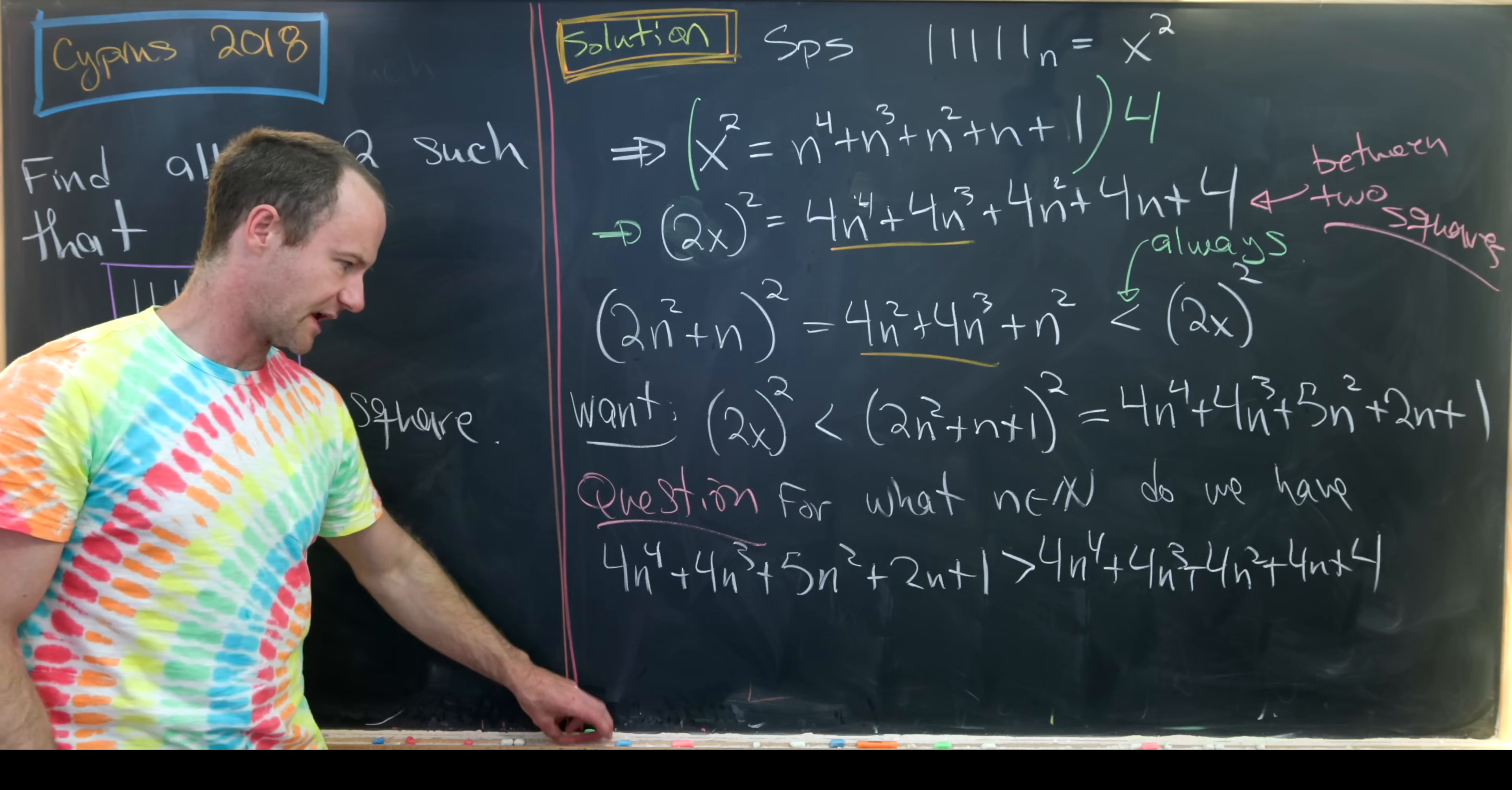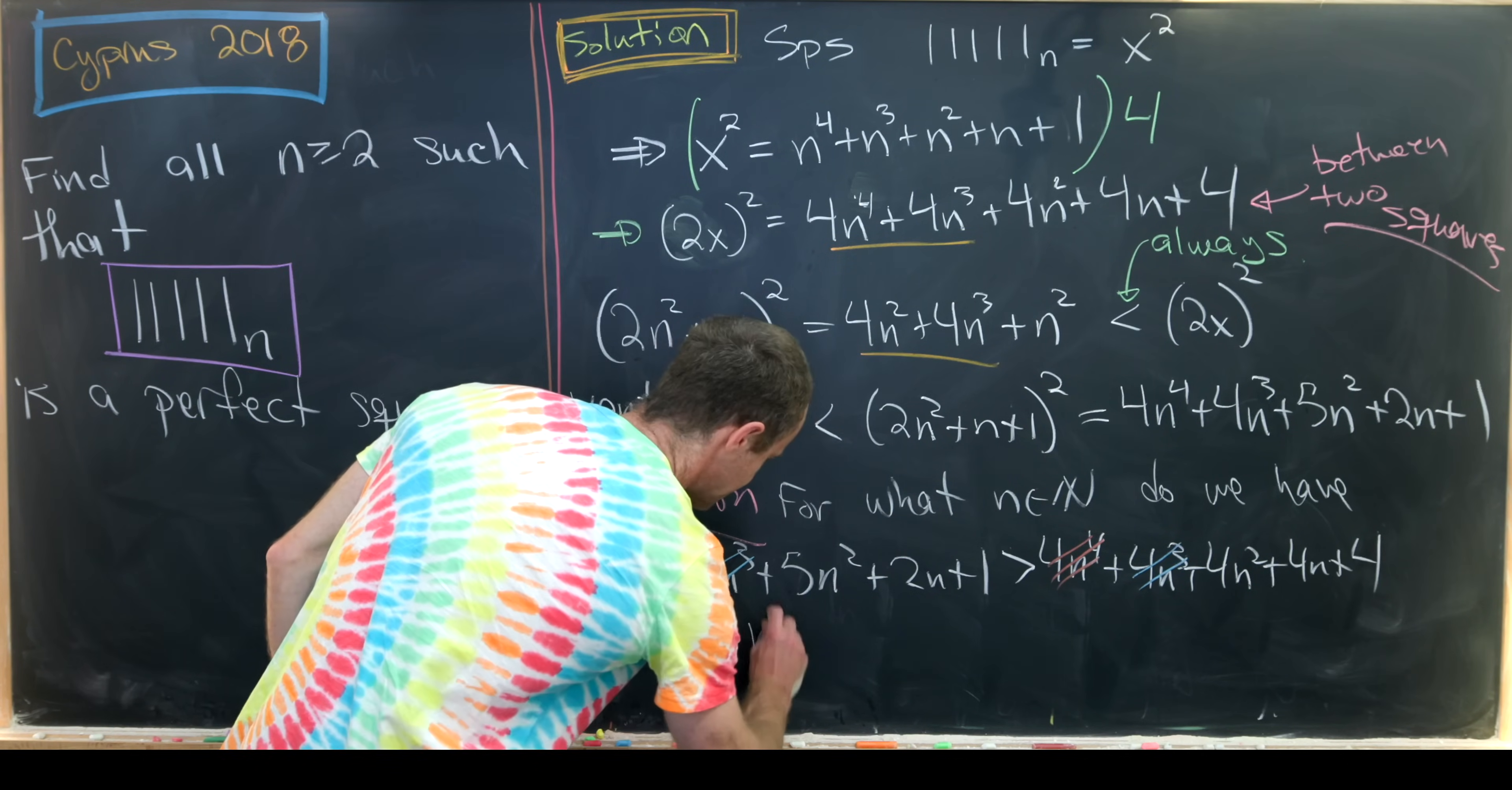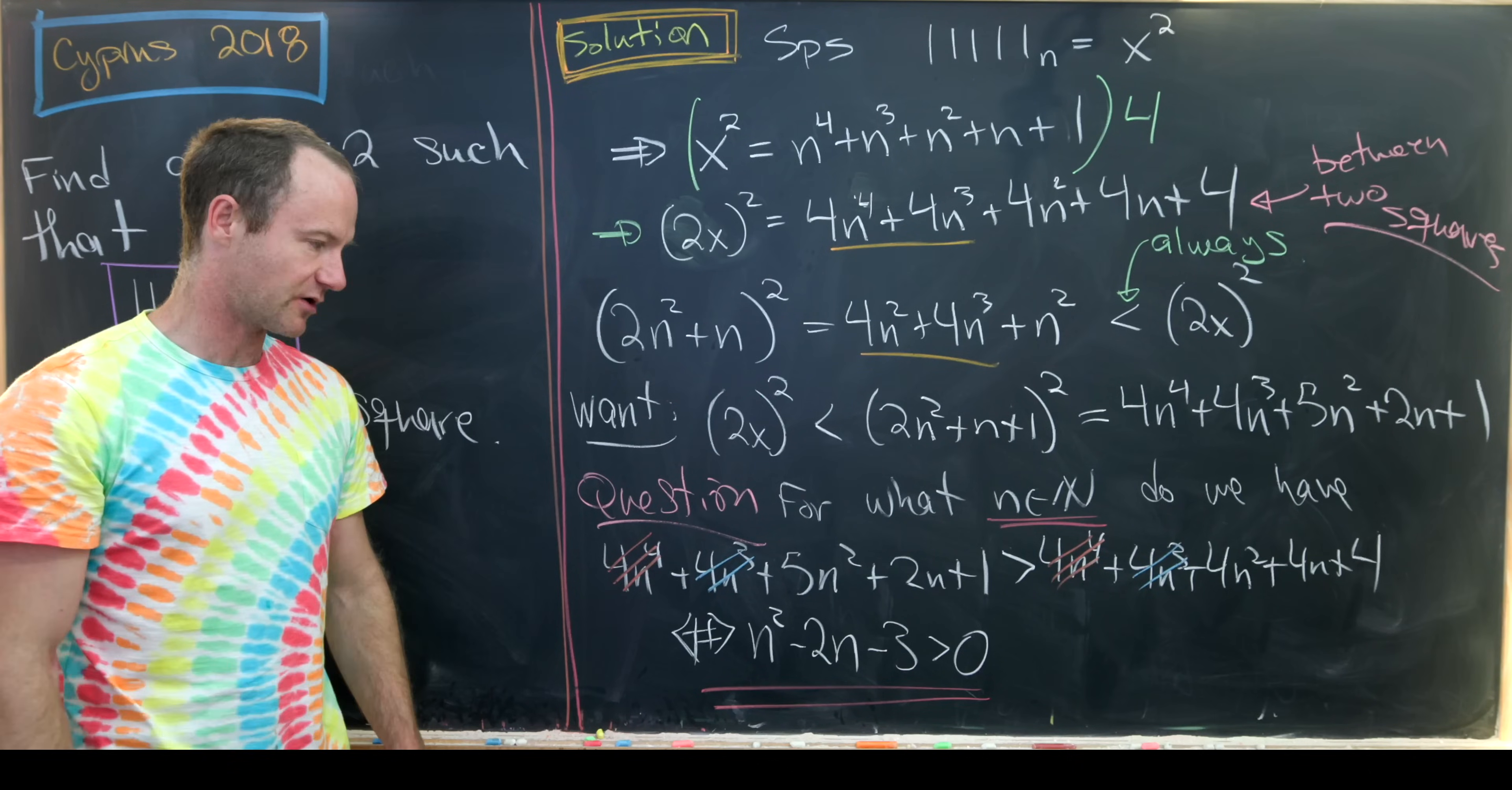But there's actually quite a bit that can cancel here. This 4n to the fourth will cancel this 4n to the fourth. This 4n cubed will cancel this 4n cubed. And then we're left with a quadratic inequality. So let's move some things around on that quadratic inequality. And notice we get 5n squared minus 4n squared. That's going to give us n squared. We have 2n minus 4n. That's going to be minus 2n. And then we have 1 minus 4. That's going to be minus 3.